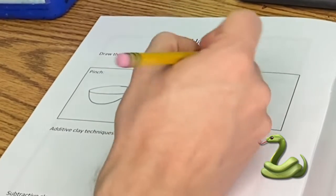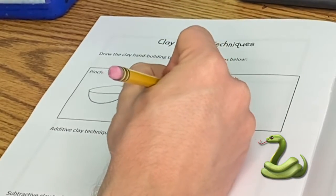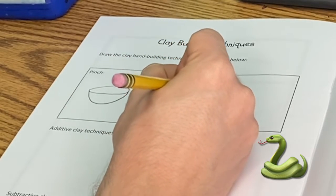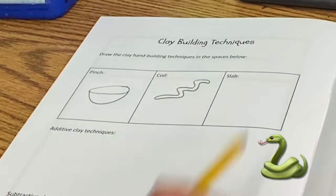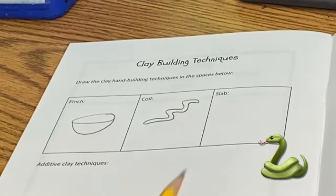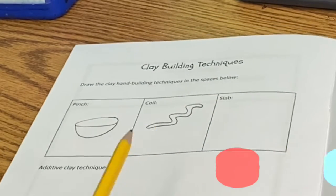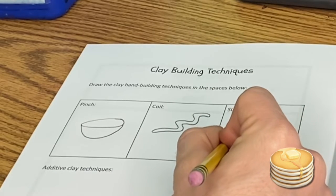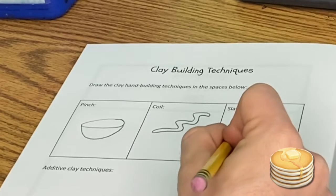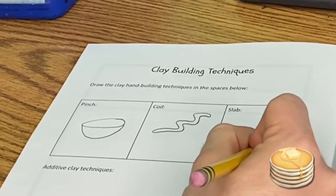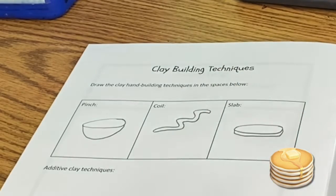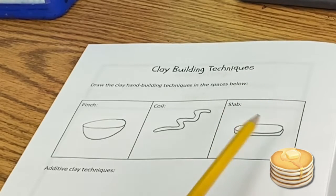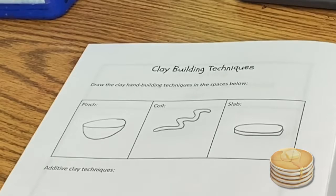Next we're going to do coil. A coil is basically a snake out of clay. That's all I'm literally drawing. Give me a thumbs up once you have a coil of clay. And then we also have a slab. A slab is just basically a little pancake where you flatten it out into a circle. And that's where our coils are going to go. Give me a thumbs up once you have something that looks a little bit like a pancake.